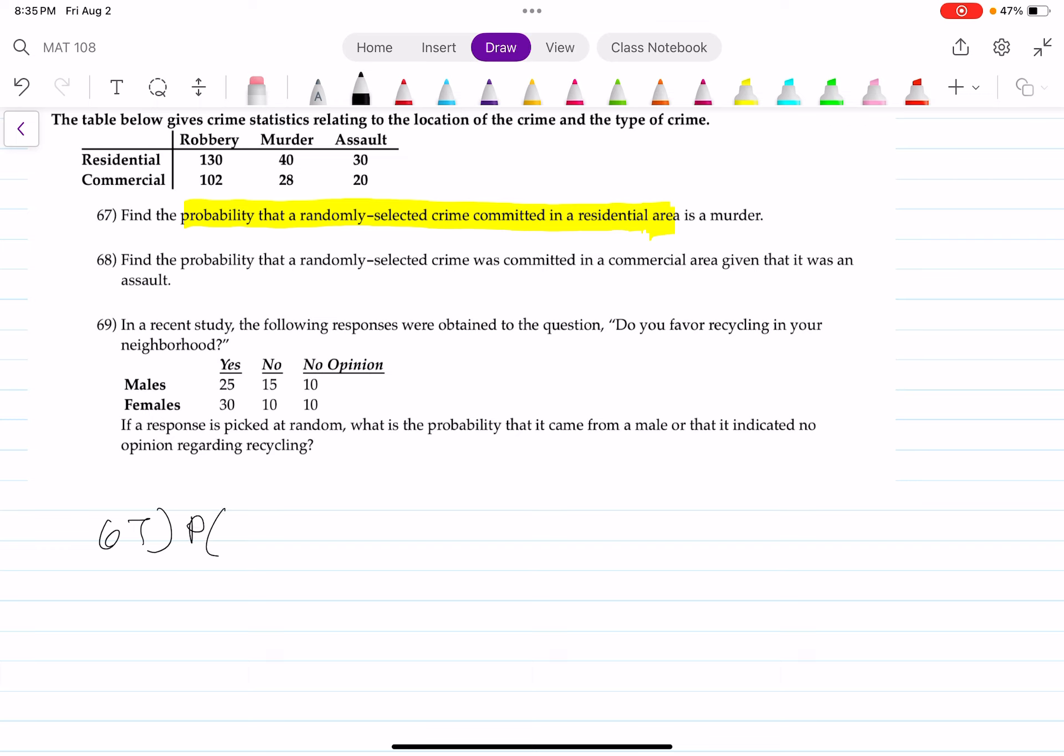Now remember, the conditional probability formula says the probability of event B given event A equals to the number of outcomes that are in both B and A divided by the number of outcomes that are in A.